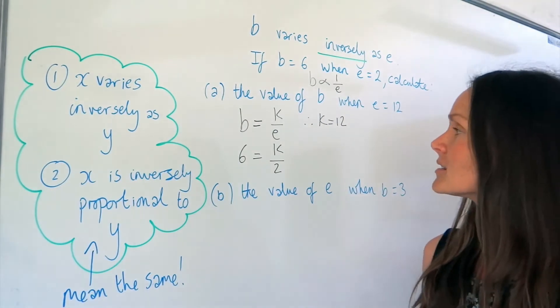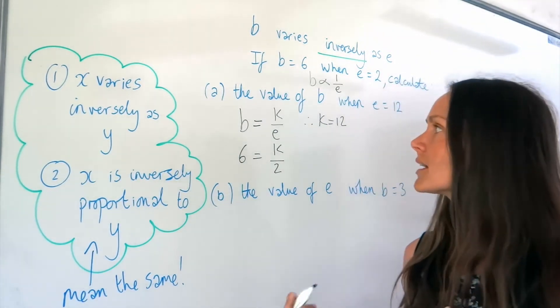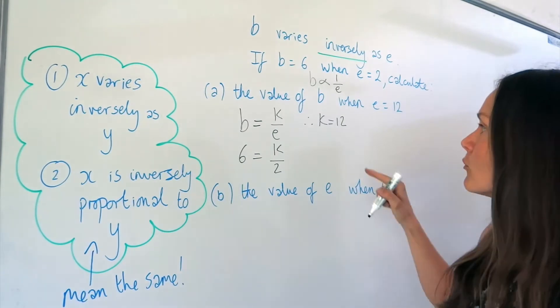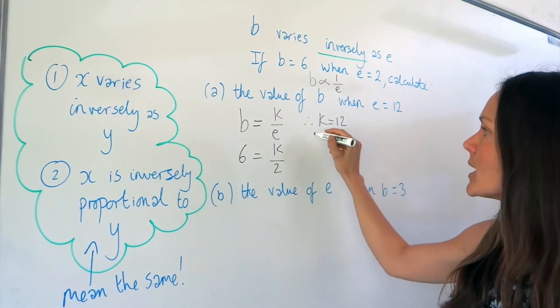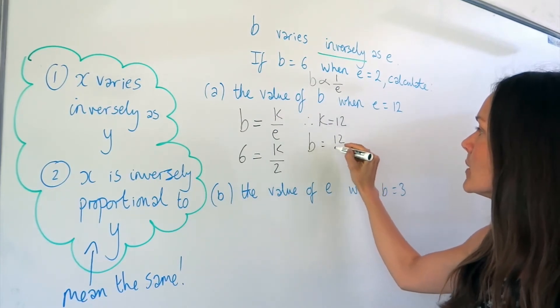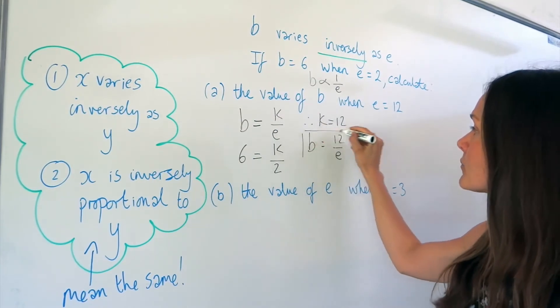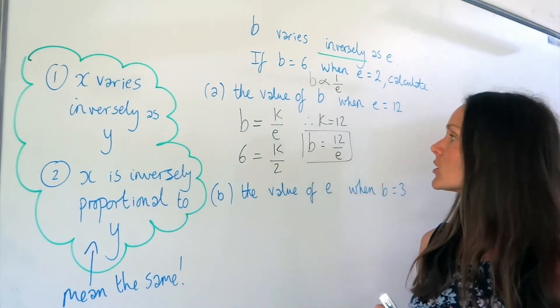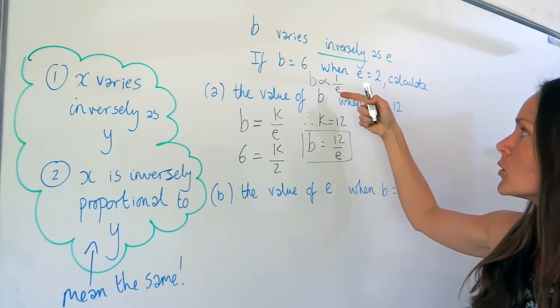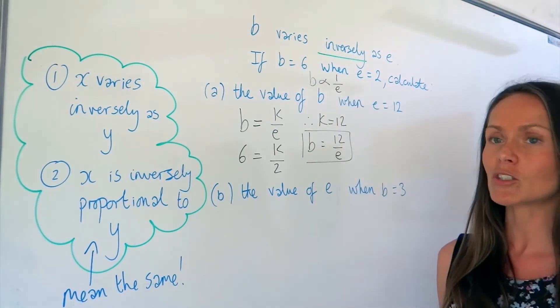So that means I can write down the full equation connecting B and E. Remember, K is the numerator. So if we substitute that number into this equation, we get B equals 12 over E. So this is the equation connecting B and E. So we can use this to work out parts A and B in this question.